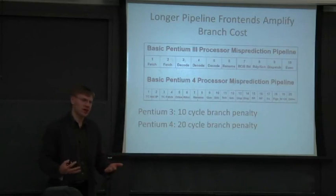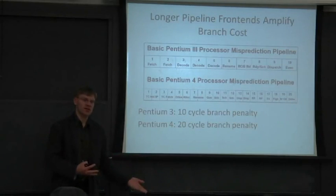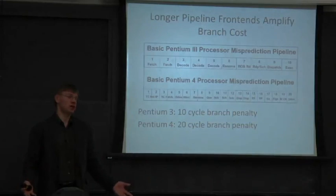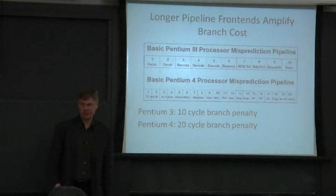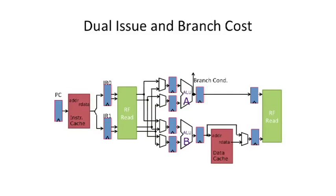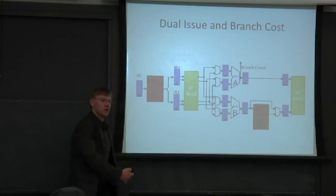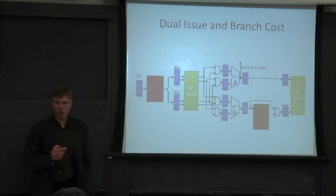Up to this point, we've talked about speculating the fall-through case and briefly about speculating the non-fall-through case, but we didn't say how you could do that — and today we're going to talk about what hardware is needed for that. Also making life worse is going wide. If we have a dual-issue processor, when you go to kill instructions, you're killing twice as many instructions in flight if you mispredict a branch.